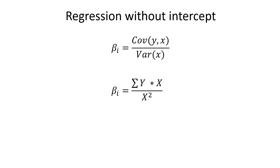This understanding of regression without an intercept will come in handy when we move towards D-CAPM. In regression without intercept, we just take the Y series, multiply it by the X series, take the summation, and divide by the sum of the squared X series.